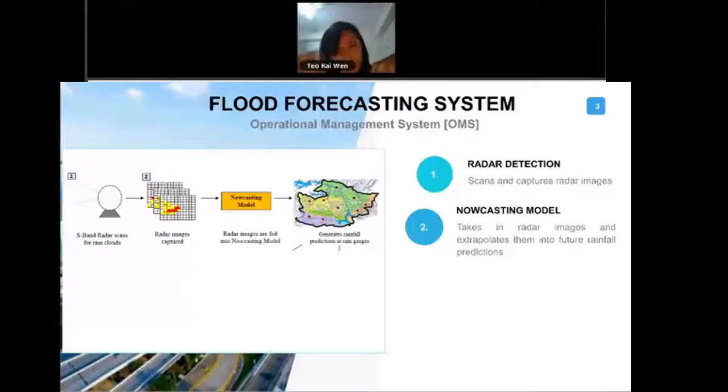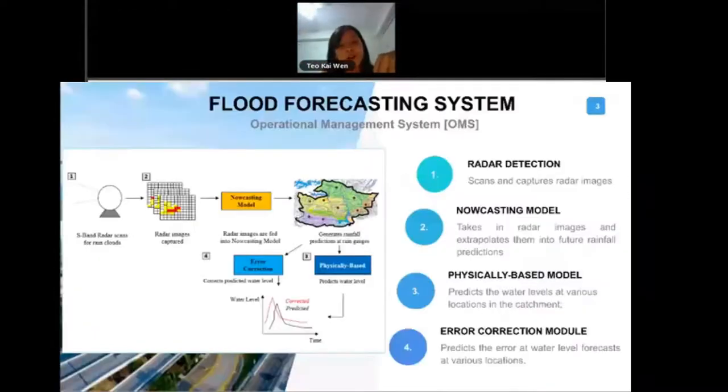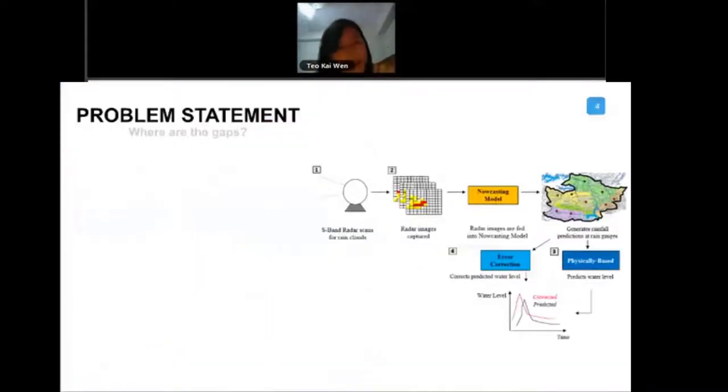There is a flood forecasting system in Singapore, just like many countries in the world. For Singapore, we actually comprise of four systems, four components. The first component is an S-band weather radar. What it does is it scans the rain clouds. With the radar images captured, it is then being fed into a nowcast model.